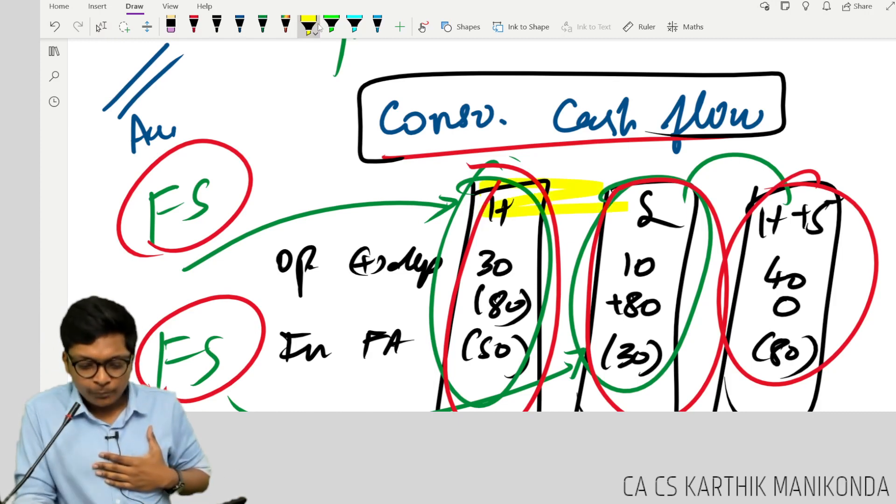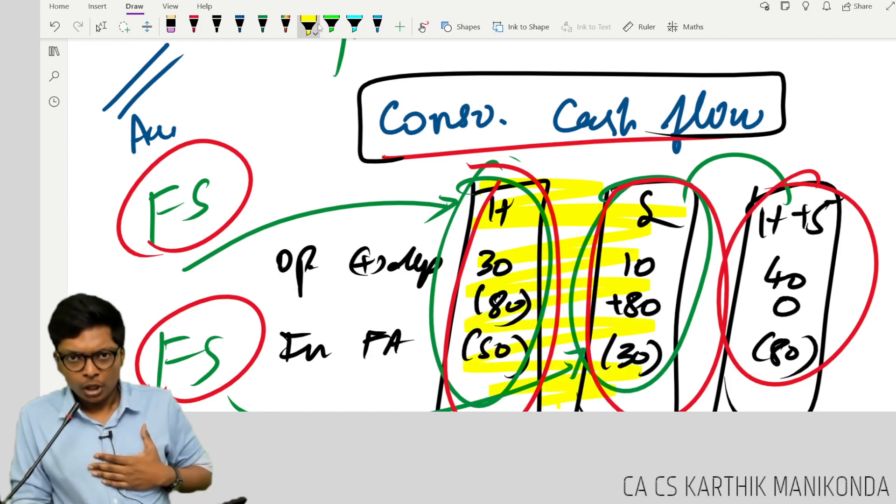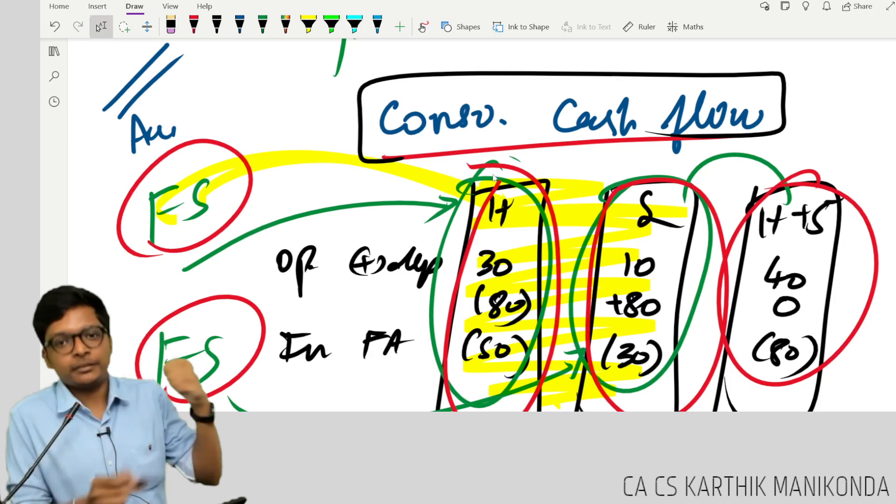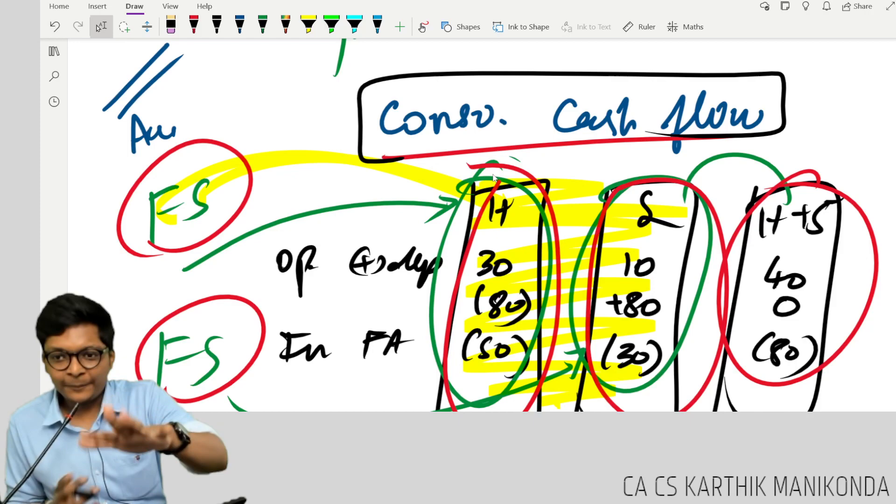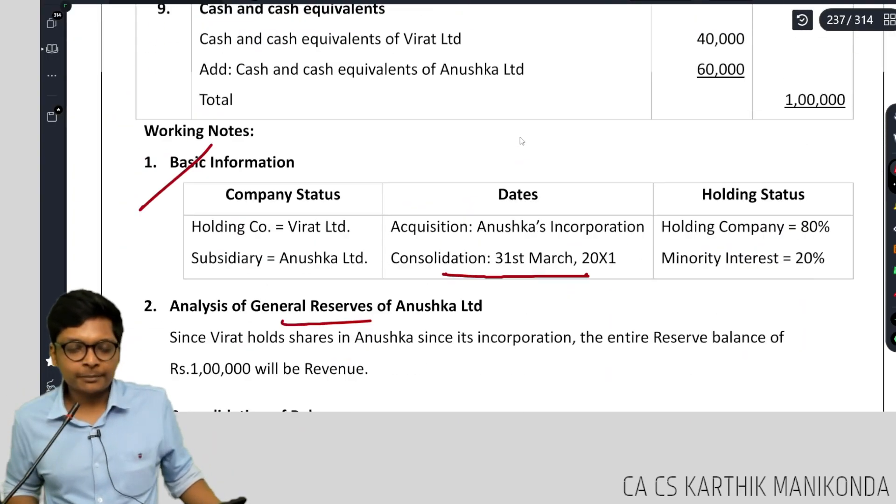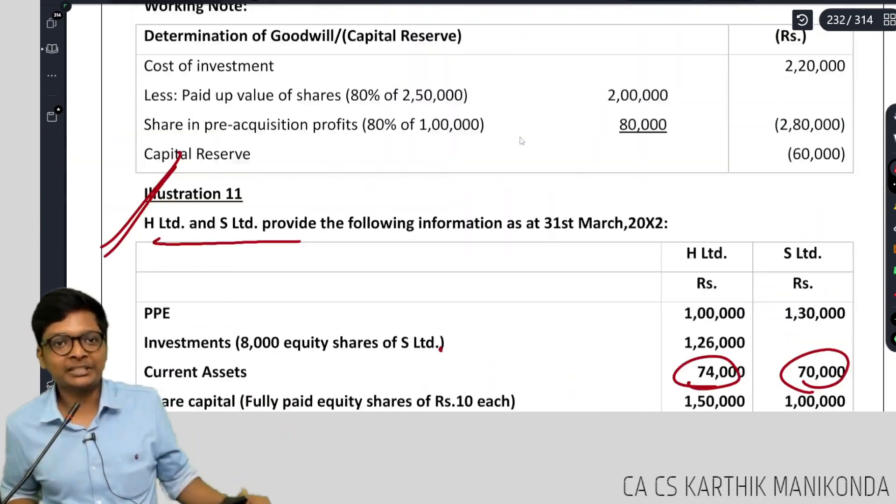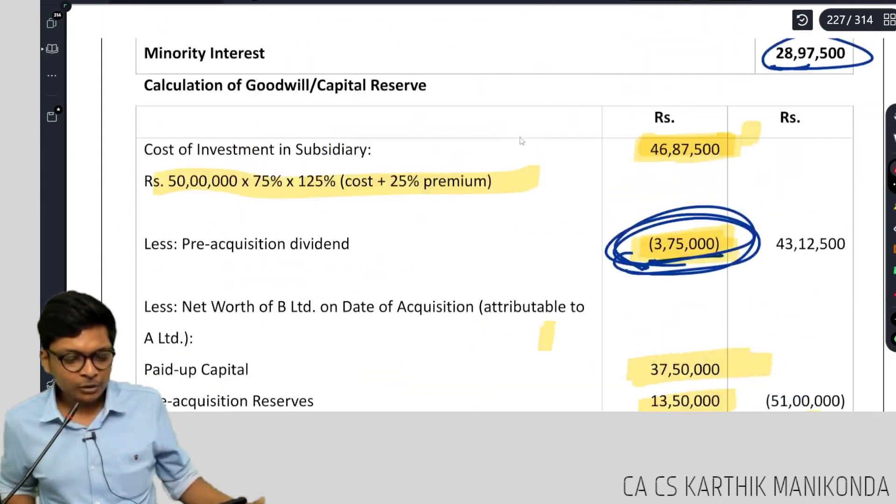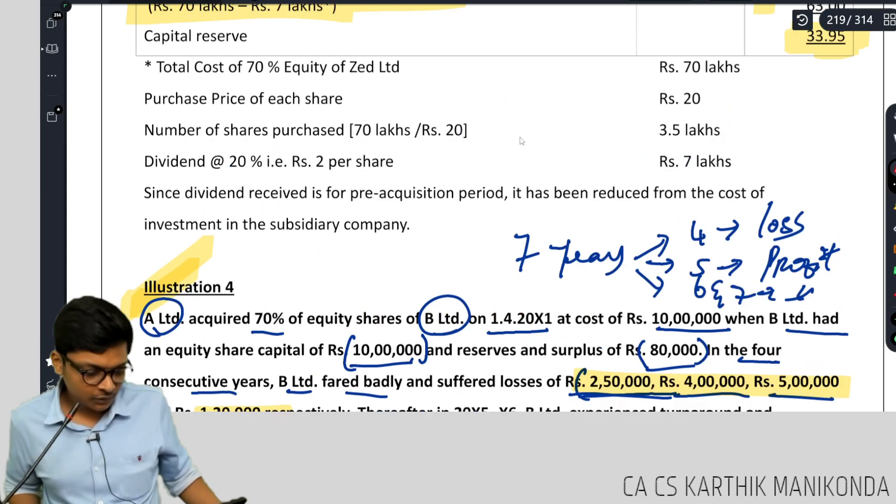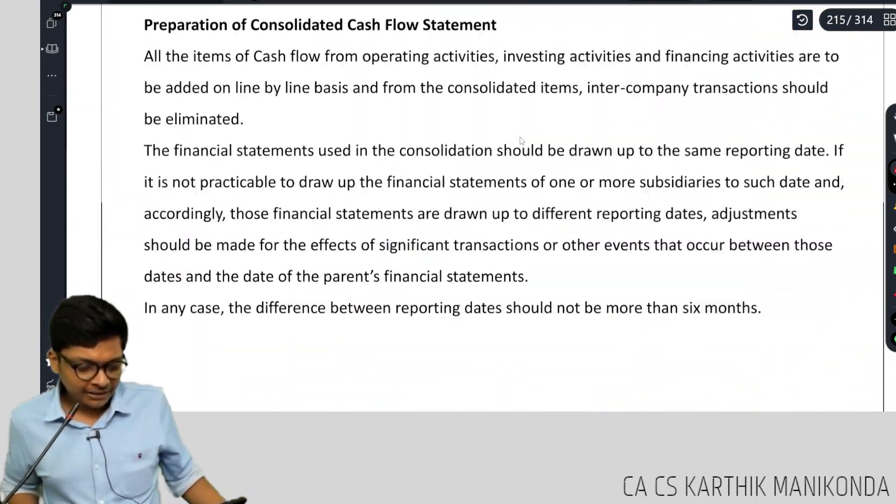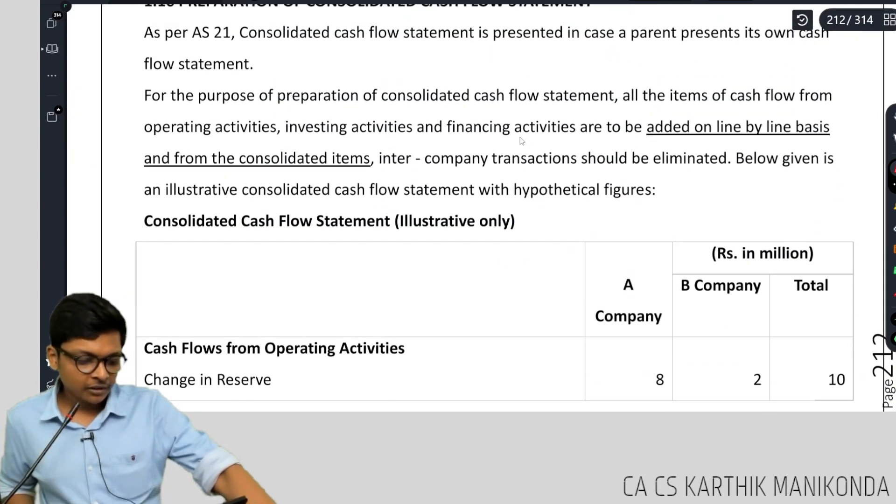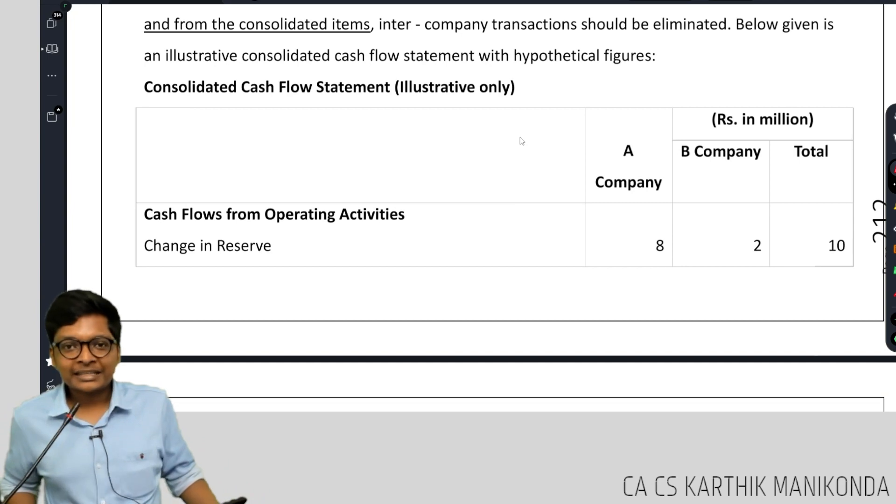For us, they will give both the cash flows or even if they ask you to prepare cash flow, until preparing cash flow it is AS3, separately for holding, separately for subsidiary. You should do only line by line addition. For that we have one sum, it is not there in the illustrations, it is there in example sums in the study material. We are going to solve it together now. After that you tell me if you want this in exam or not. Only one sum, easy one. It is there in the book guys. Here it is, fine. Illustrative 2, only consolidated cash flow.